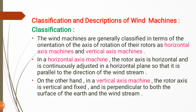Classification and description of the wind machine — this is the second point of our chapter. Wind machines are generally classified in terms of the orientation of the axis of rotation of their rotors as horizontal axis machines and vertical axis machines. These two types are based on the orientation of the axis of rotation used in the wind turbine.